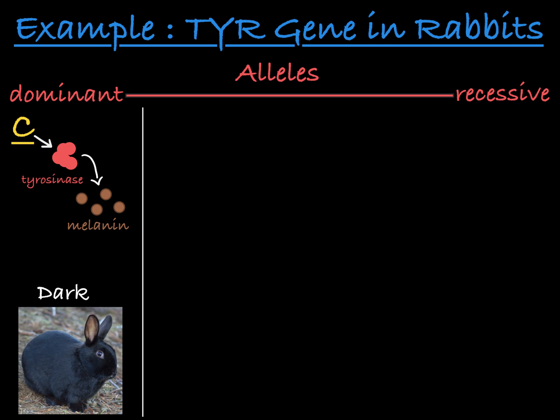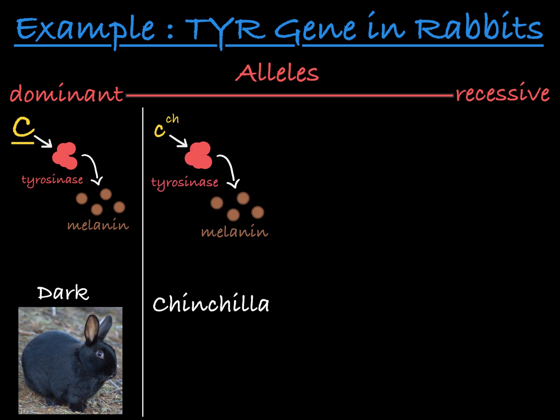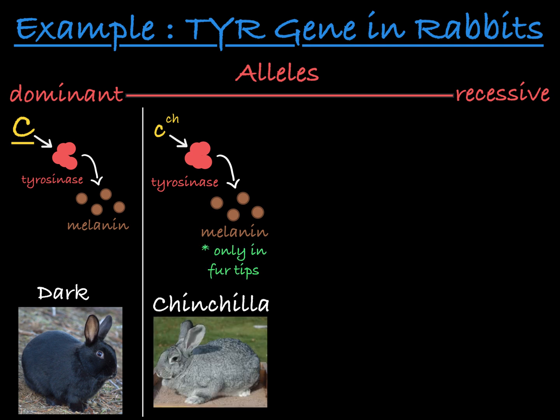The next allele is CCH, which we call the chinchilla allele. This results in the production of a version of the tyrosinase enzyme that creates melanin in the tips of the fur, but the rest of the fur is white. So a rabbit that is homozygous for this chinchilla allele will have dark-tipped white fur.